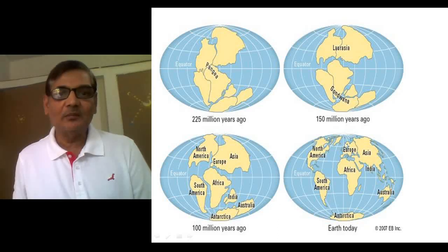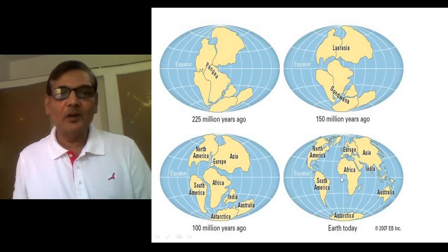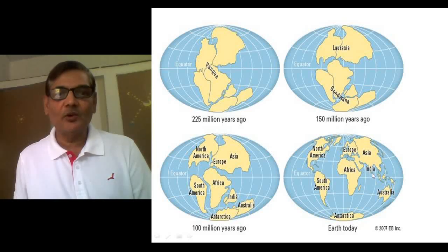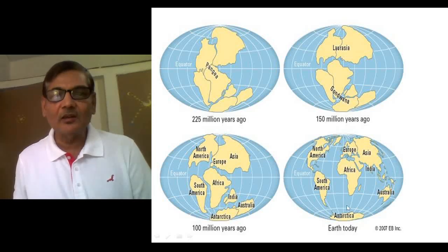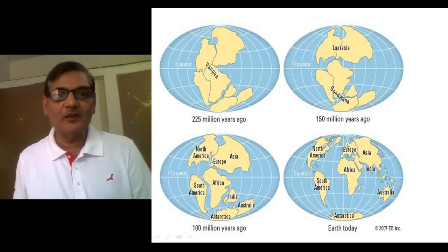Presently, we have the current map of the world. Today, the entire globe is divided into six geographical areas. These areas are: the Palearctic region, the Oriental region, the Australian region, the Ethiopian region, the Nearctic region, and the Neotropical region.